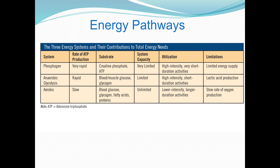Our aerobic energy pathway primarily uses glucose, glycogen, and fatty acids. It can also use protein for fuel. Basically, it involves oxygen production. The aerobic pathway is primarily used by type 1 muscle fibers in the mitochondria.